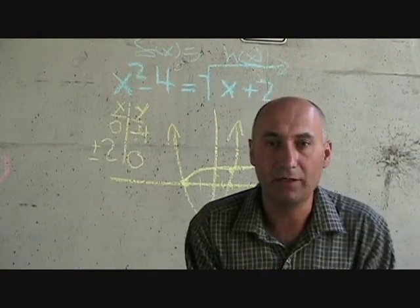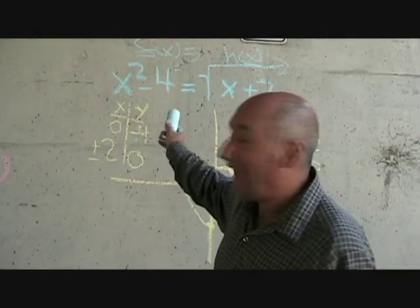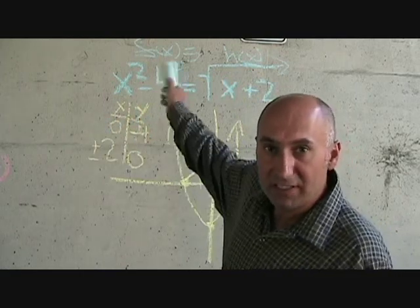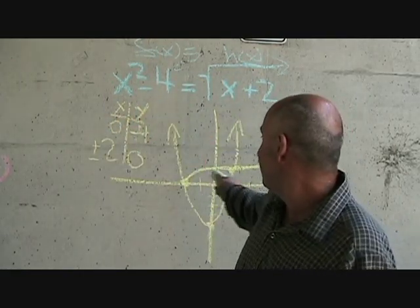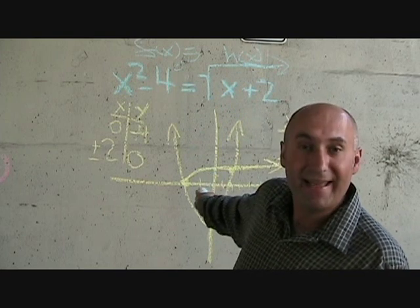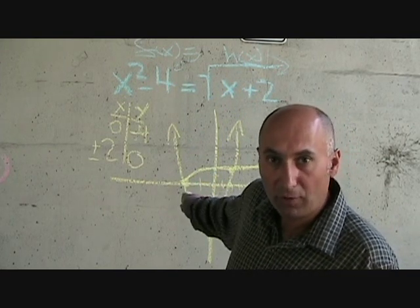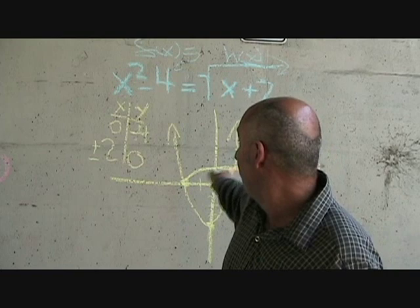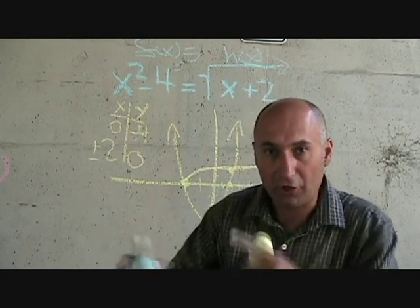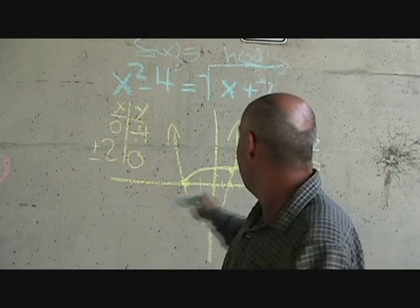So what we have right now is answering the question, when does this function cross this function? Well, at this point, at negative 2 and 0. They both cross, so at that coordinate system, both functions are crossing each other, are hitting each other.